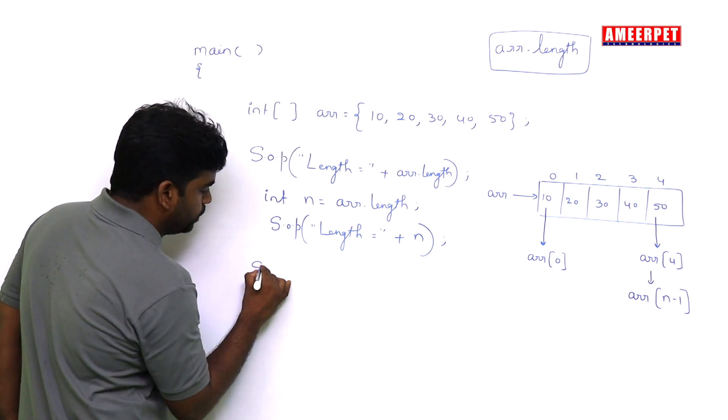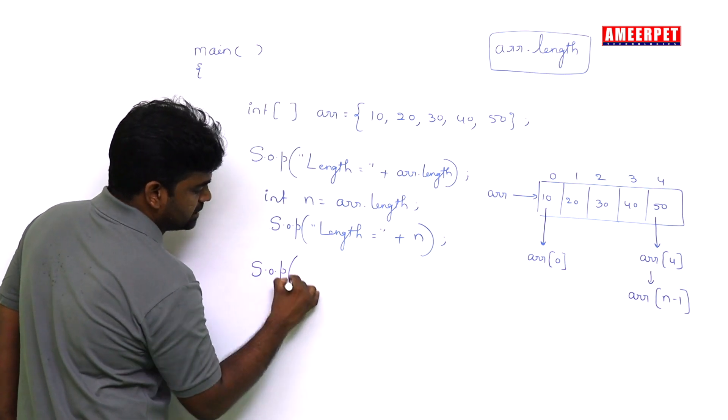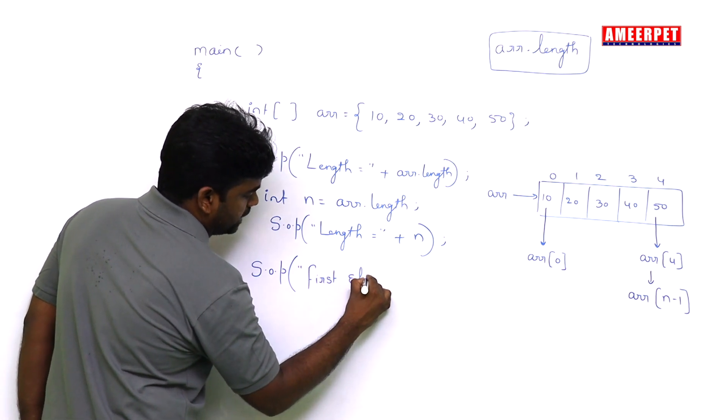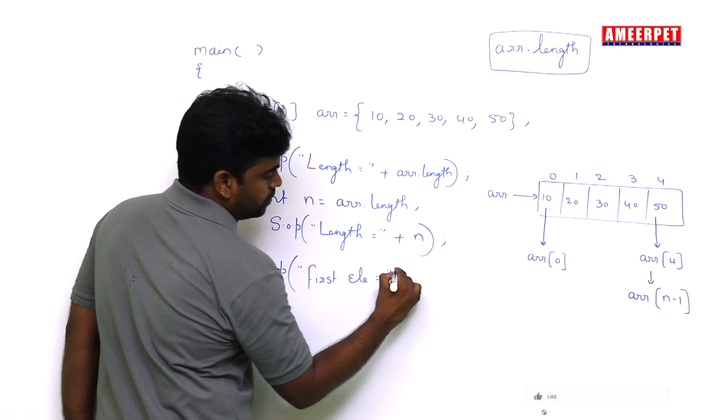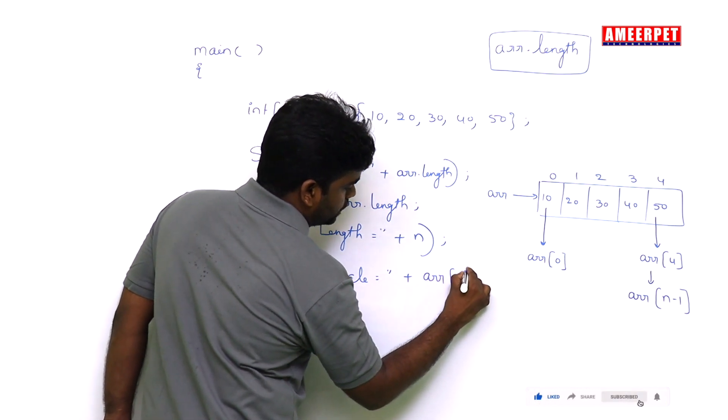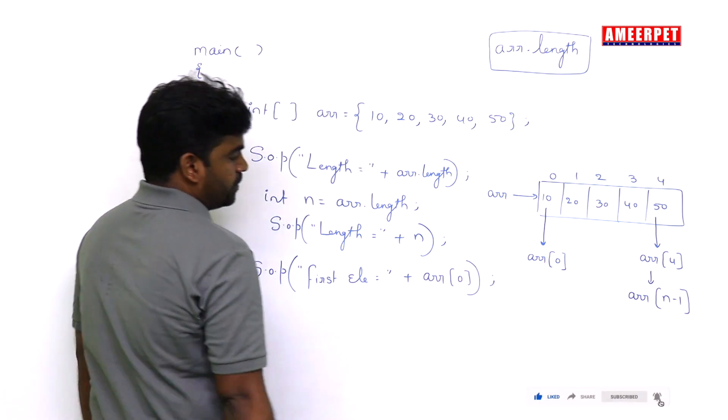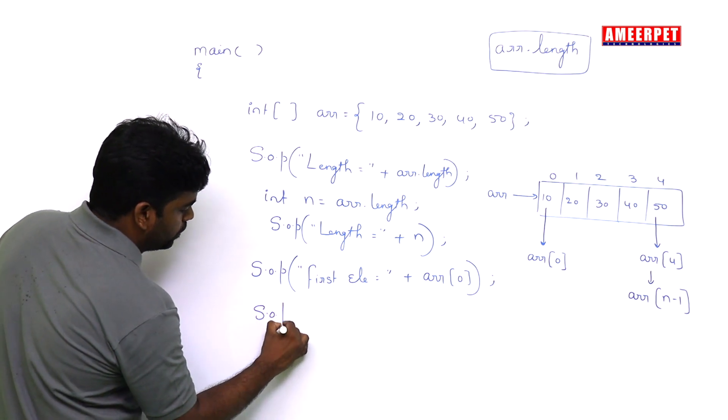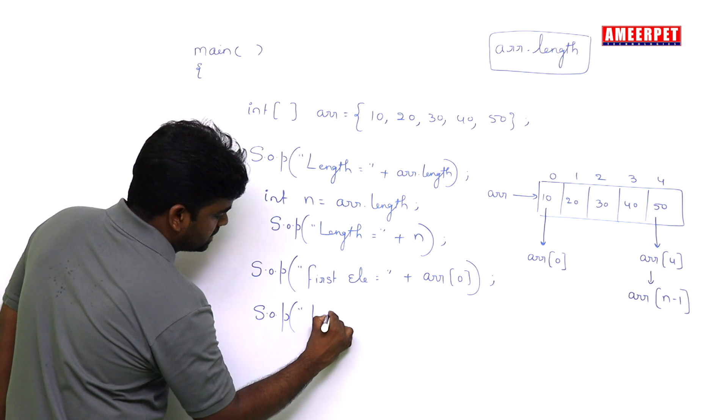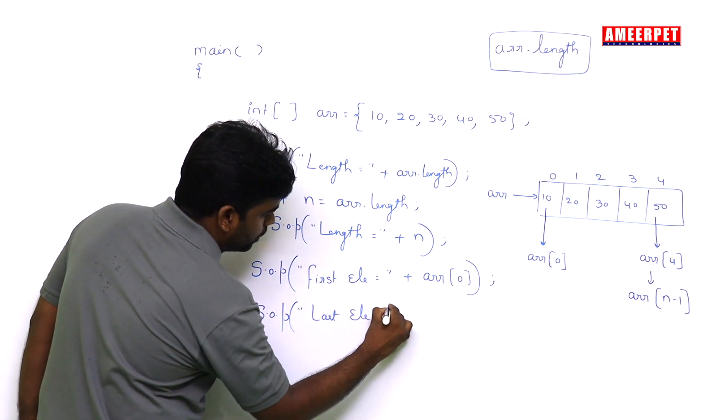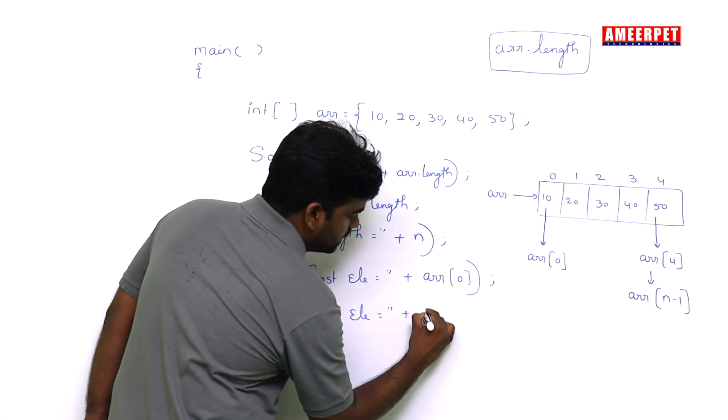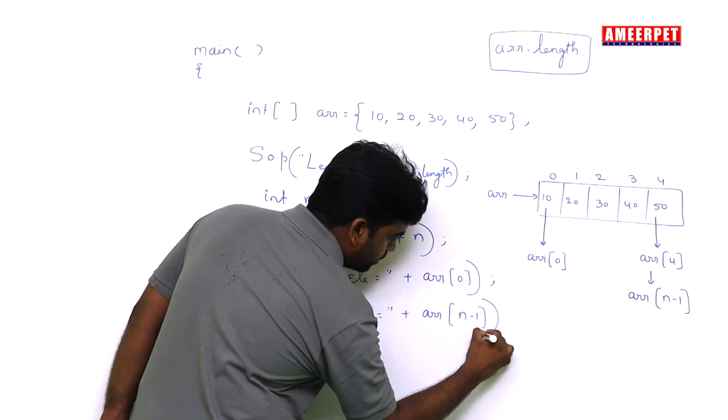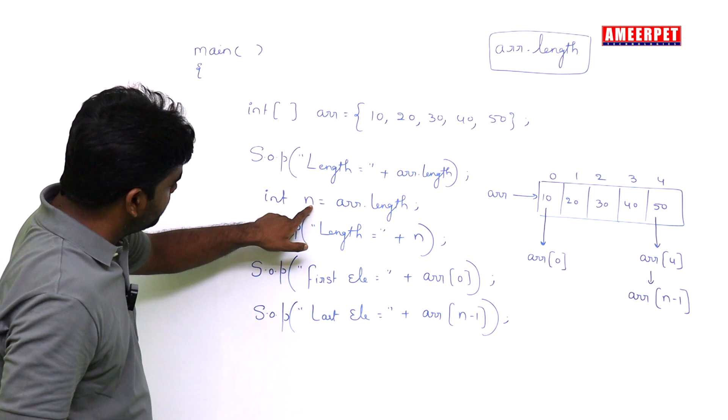If you want to display the first element: System.out.println, the first element equal to arr of 0. System.out.println, the last element equal to arr of n minus 1, because n we already have taken.